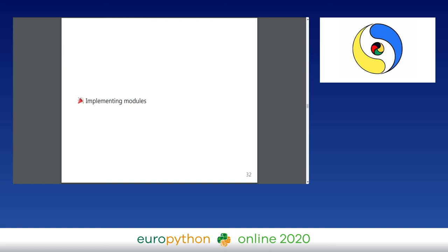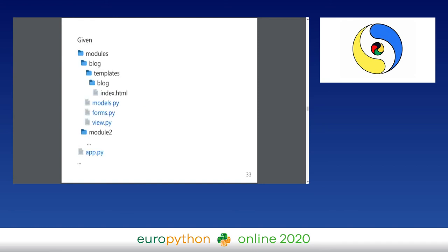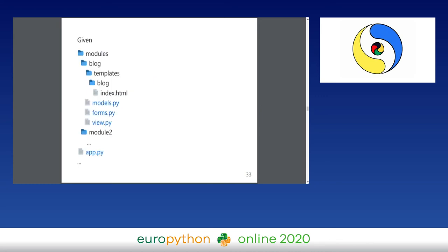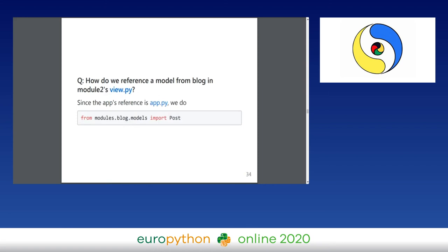Here is how to implement Django modules in Flask. The architecture has a modules folder, inside it a folder called blog, and inside that folder are templates, models, forms, and view files. To reference a model from blog in another module's view.py, you write: from modules.blog.models import Post. Within the same module you can use a relative import: from .models import Post.